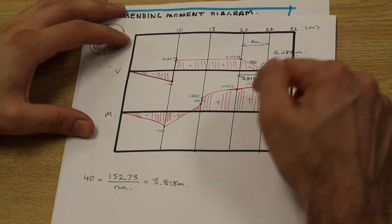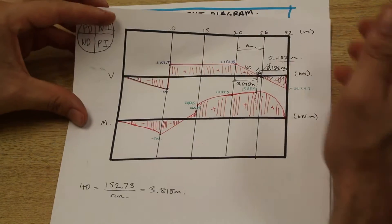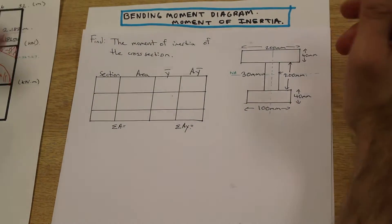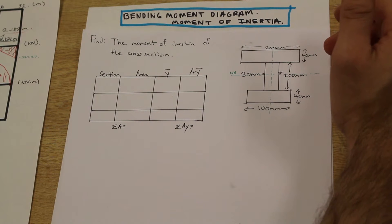So we did that. We found the maximum moment and we drew our shear and bending moment diagrams. Now we are given the next step in the question, and this kind of question is something you can definitely expect in a course like this.